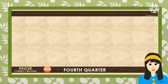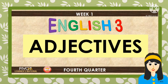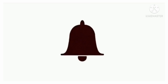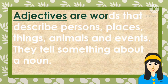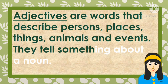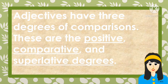Good day, children! We are in the fourth quarter of English Grade 3. Today we will learn about adjectives. Are you ready? Let us start. Do you still remember what an adjective is? Adjectives are words that describe persons, places, things, animals, and events. They tell something about a noun.